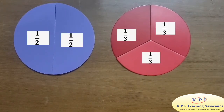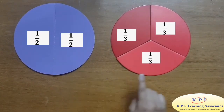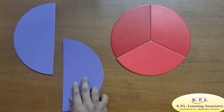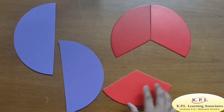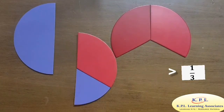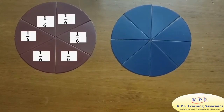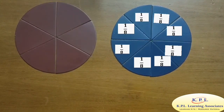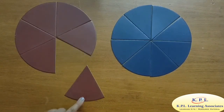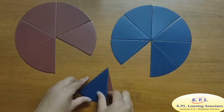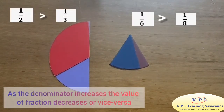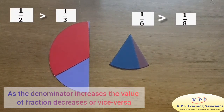Let us compare some unit fractions where the numerator is one. Here I have two circles: one divided into two equal parts and one divided into three equal parts. I will take one by two and one third. We can see that one by two is greater than one third. Let us take one more example. This circle is divided into six equal parts and this is divided into eight equal parts. I will take one sixth and one eighth. We can see that one sixth is greater than one eighth. We can observe that as the denominator increases, the value of the fraction decreases, or vice versa.